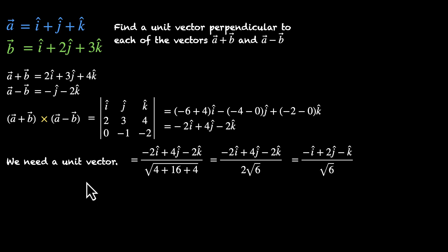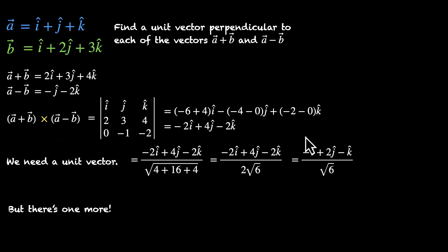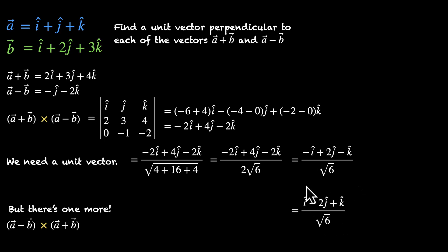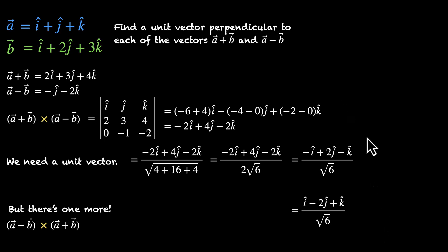This unit vector is perpendicular to both a plus b and a minus b. But we're not done — there's one more vector. We could also take a minus b cross a plus b, which gives a vector in the opposite direction with the same magnitude: i-cap minus 2j-cap plus k-cap divided by root 6. Think of it like the positive and negative z-axis — both are perpendicular to the xy-plane.